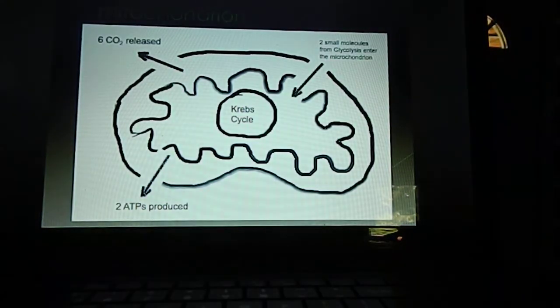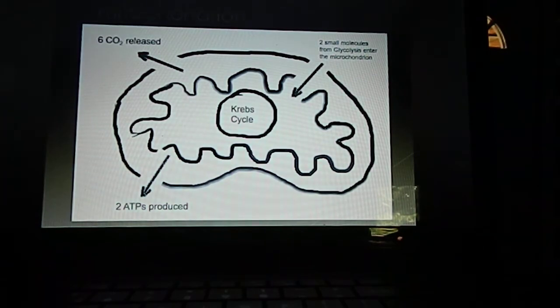Here's one of my drawings, just to show that you have the two small molecules going into the mitochondrion. The Krebs cycle occurs, and six carbon dioxides are released.